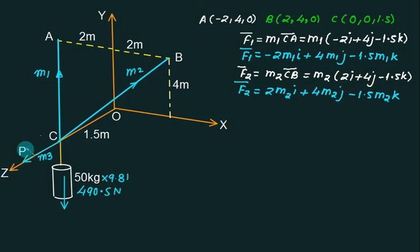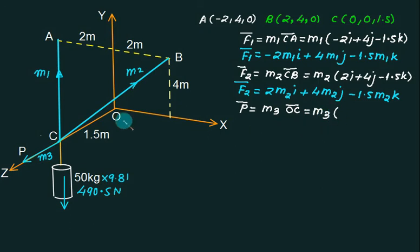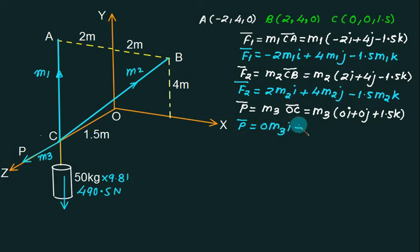Now for force P, we assume force multiplier equal to m3, and this force is directed from O to C. The vector OC bar: since O is (0,0,0), it is the same as the coordinate of C, giving 0i plus 0j plus 1.5k. So F3 equals 0m3 i plus 0m3 j plus 1.5m3 k. Let's call this force W bar.